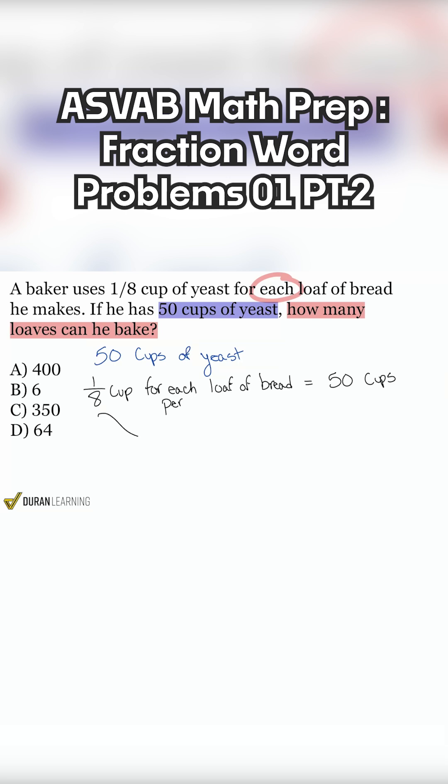So instead of multiplying forward to get the grand total number of cups, what are we doing? We are working what and what operation do we need? Yeah, we're working backwards and we need to divide. Again, we would use multiplication if we were trying to get to the grand total. But we already have the grand total, 50 cups of yeast.